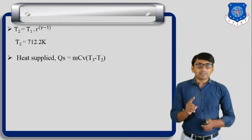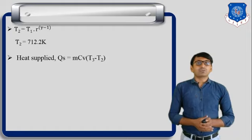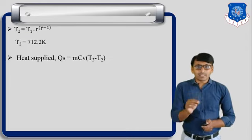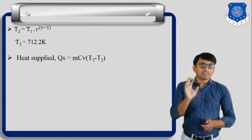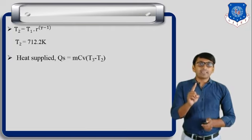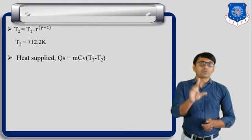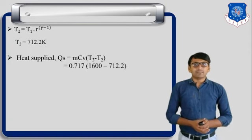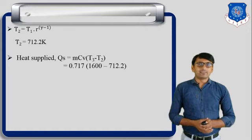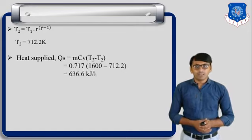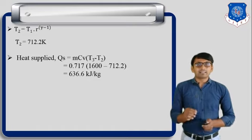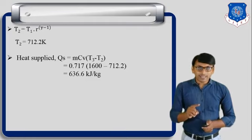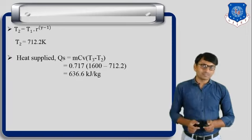Second step: heat supply, denoted by Qs, during the 2-3 process. Qs equals m·Cv·(T3 minus T2). We use Cv because process 2-3 is a constant volume process — heat supply in the Otto cycle occurs during the constant volume process. Putting in Cv = 0.717, T3 = 1600, and T2 = 712.2, we get Qs equal to 636.6 kilojoule per kg.